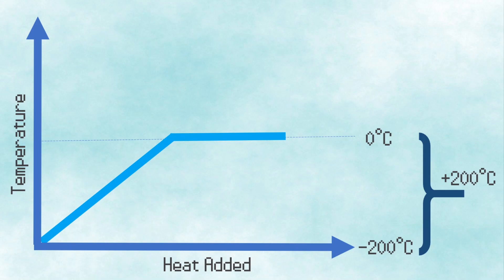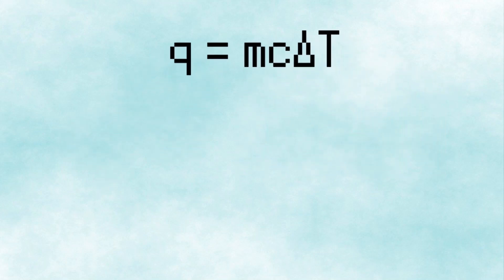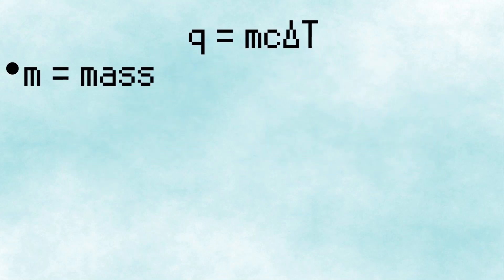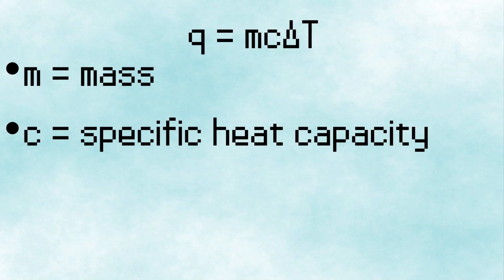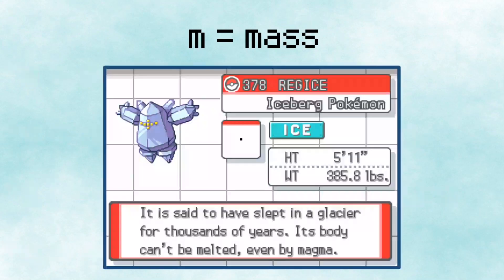To calculate how much heat would be needed to change the temperature of a certain substance by a certain number of degrees, we can use the equation Q equals MC delta T, where M is the mass of the substance, C is the specific heat capacity of the substance, delta T is the change in temperature of the substance, and Q is the amount of heat.